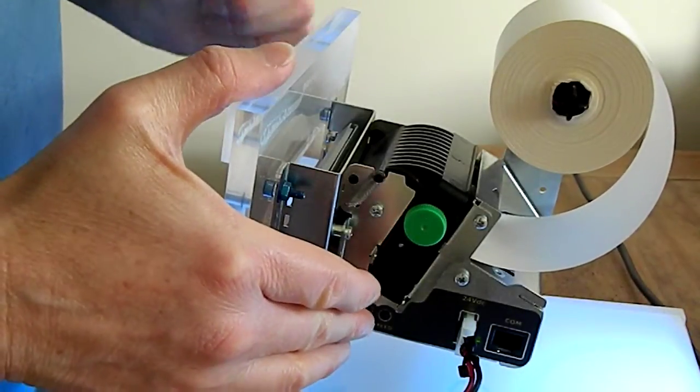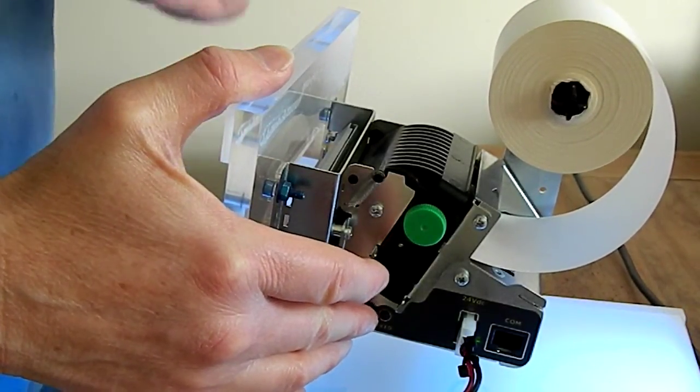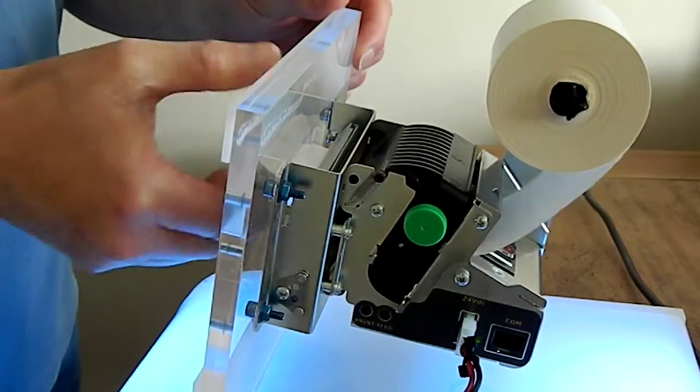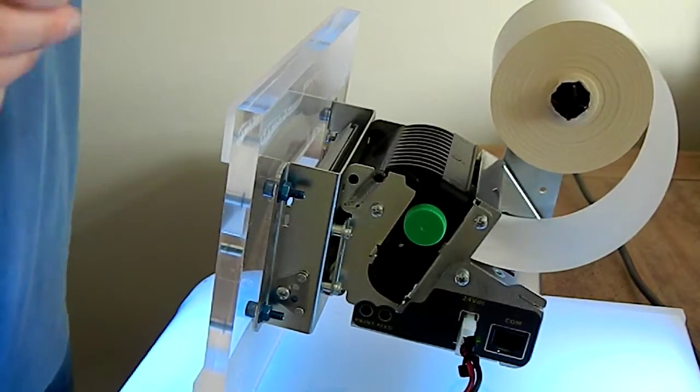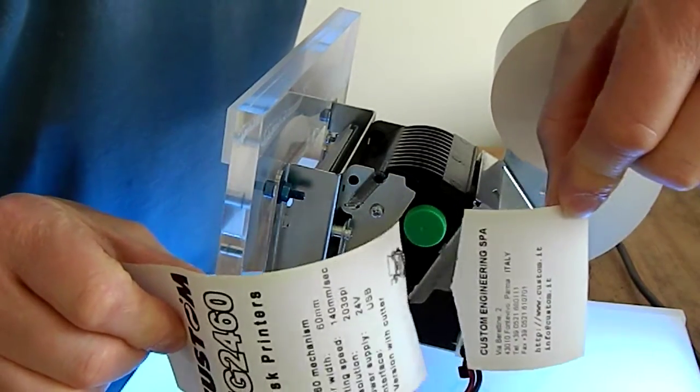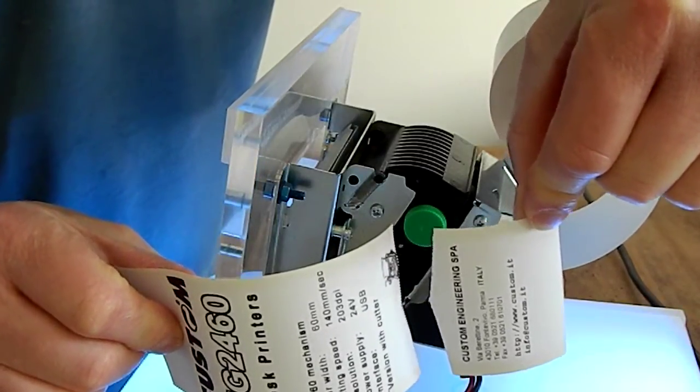And then finally, if I want to tear the paper before it's finished printing, I simply get two halves of the same finished printed receipt.